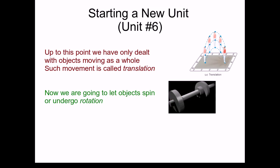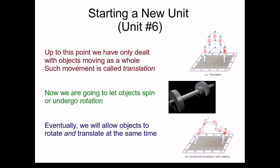Now we're going to let objects begin to spin, like this gear shaft. In physics parlance, we call such motion rotation. Eventually, we want to be able to study objects that both rotate and translate at the same time, like this gymnast here. He's moving through space, but also spinning, as he does a flip.